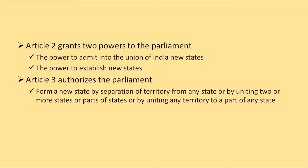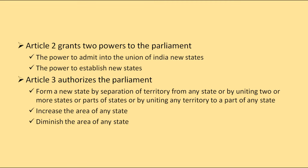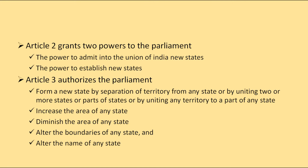Under Article 3, Parliament can also increase the area of a state, diminish the area of a state, alter the boundaries of a state, and change the name of a state. There is a difference between Article 2 and Article 3 in terms of their application and scope.